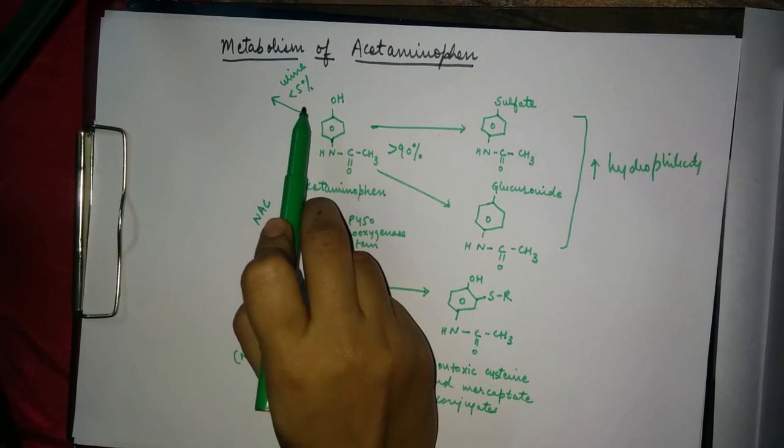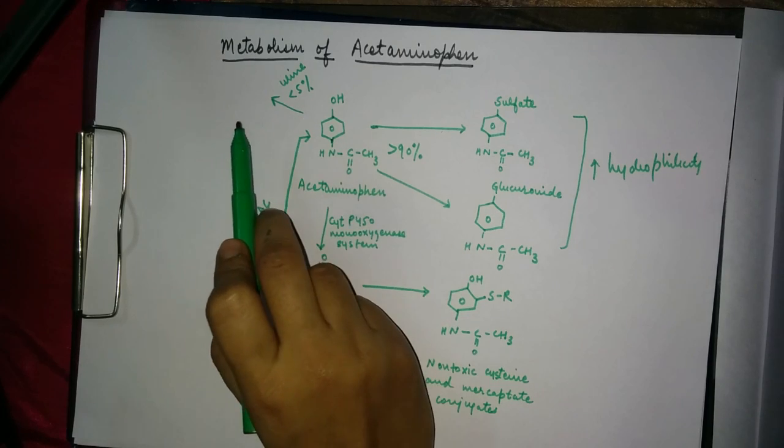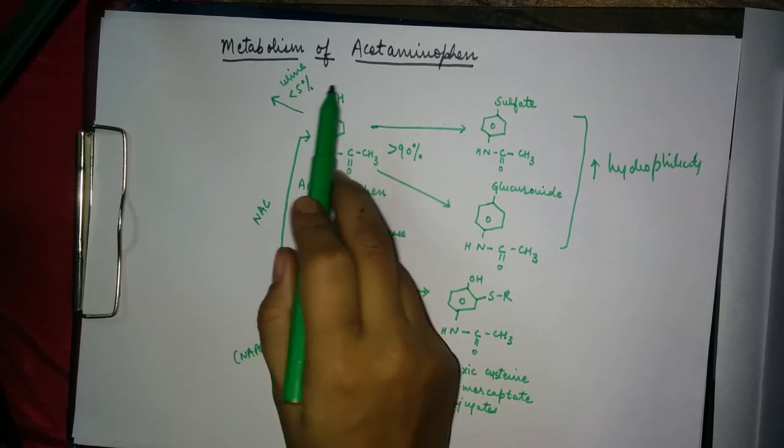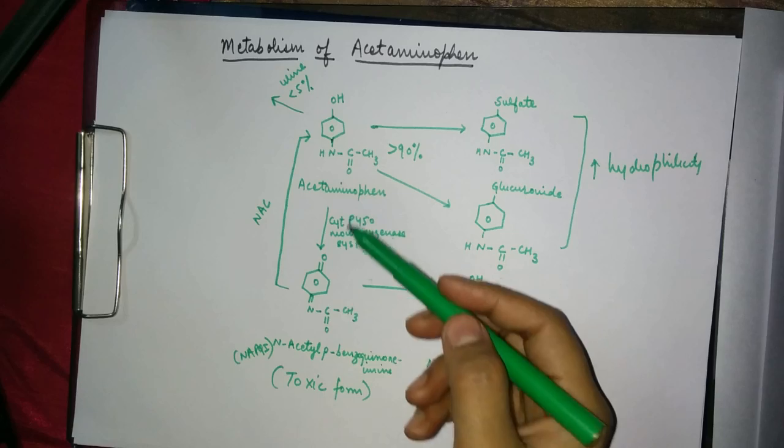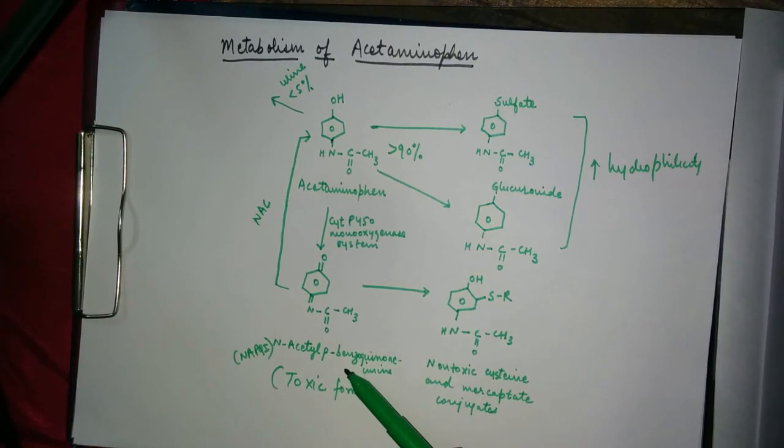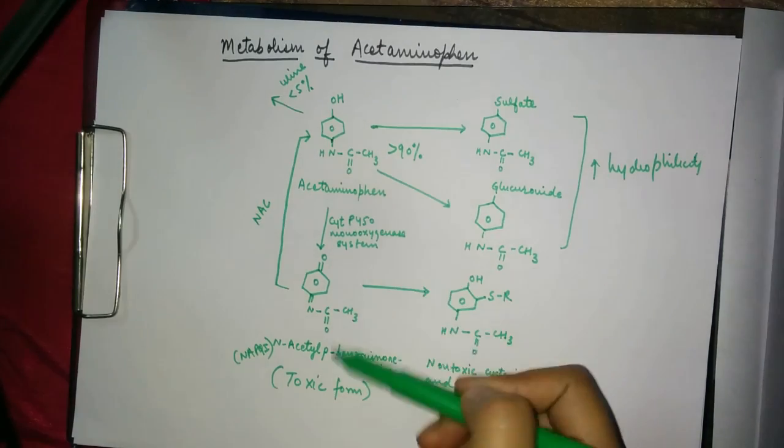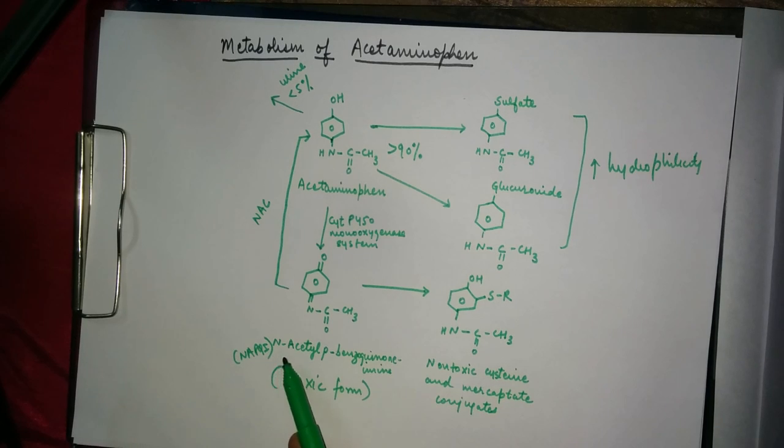About 5% of the drug is directly eliminated from the body via urine. However, about 5% of the drug gets converted into the toxic form of acetaminophen, which is NAPQI—N-acetyl-p-benzoquinone imine.